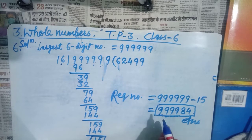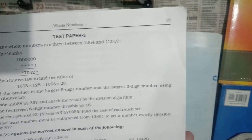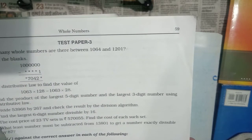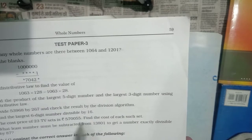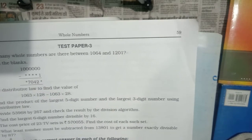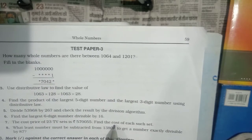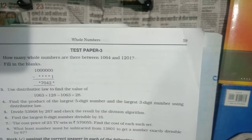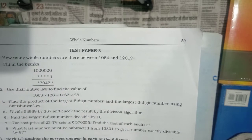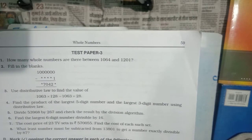Question number 8: what least number must be subtracted from 13801 to get a number exactly divisible by 87? We have already solved this type of question in a previous video. First, divide 13801 by 87. Whatever remainder you get, subtract that remainder from 13801, and the new number will be exactly divisible by 87.